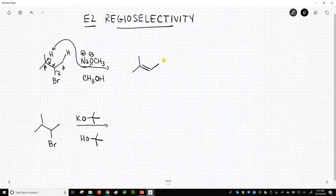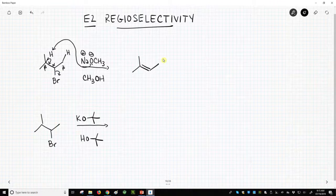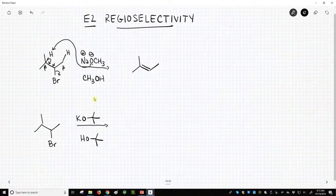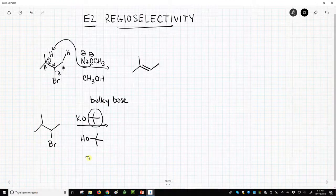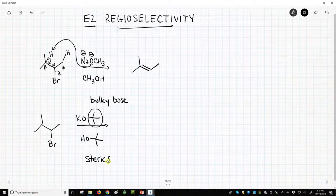Now, that beta hydrogen is not always the one that reacts. As it turns out, if we use a base, specifically a very bulky base, and what makes this bulky is t-butoxide has this massive t-butyl group on it. It's very sterically hindered, so this gets into the idea of sterics.